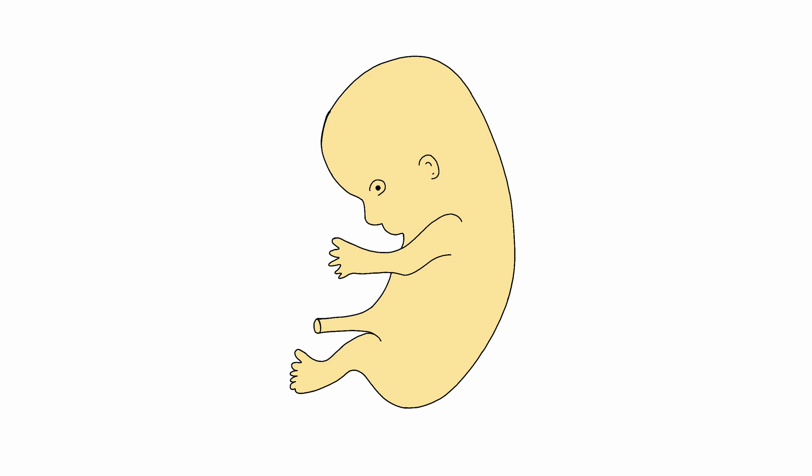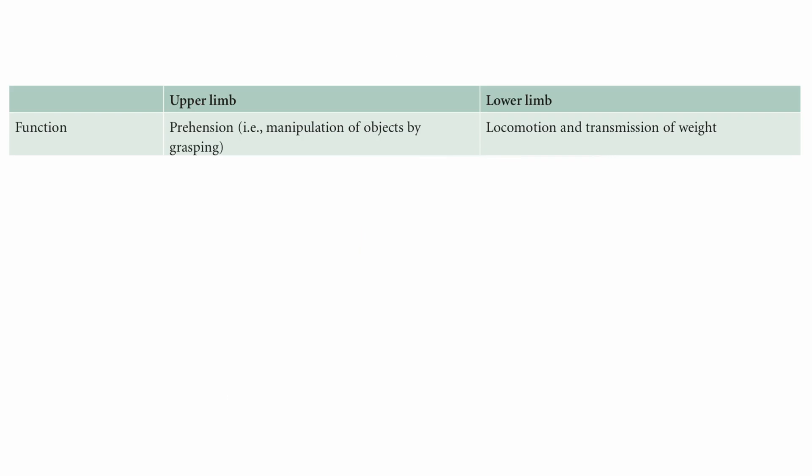The limbs then rotate. The lower limb buds rotate medially through 90 degrees so that their pre-axial border faces medially and their extensor surface faces forward. The upper limb buds, on the other hand, rotate laterally through 90 degrees so that their pre-axial border faces laterally and their extensor surface faces backward.